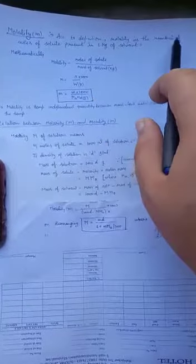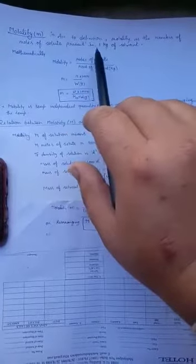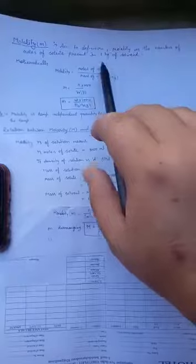According to the definition of molality, molality is the number of moles of solute present in 1 kg of solvent.